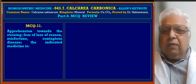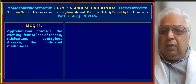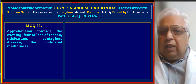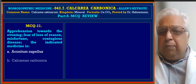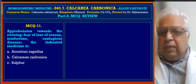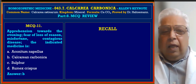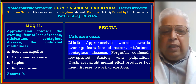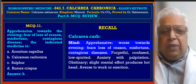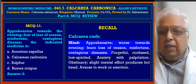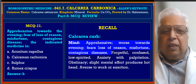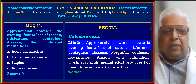MCQ 11: Apprehension towards the evening, fear of loss of reason, misfortune, contagious disease — the indicated medicine among Aconitum Napellus, Calcarea Carbonica, Sulphur, and Rumex Crispus. Answer is B, Calcarea Carbonica. Reference: mind — apprehensive, worse towards evening, fear of loss of reason, misfortune, contagious diseases. Reference from Boericke's Materia Medica.